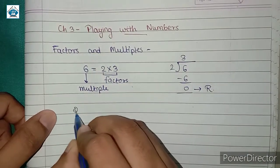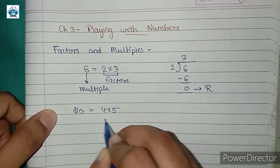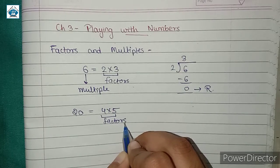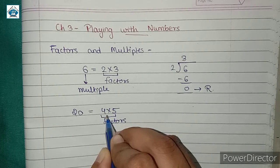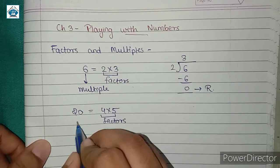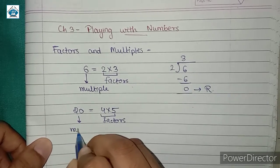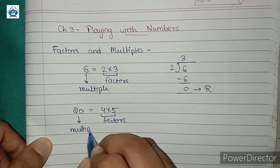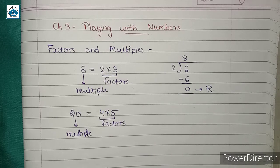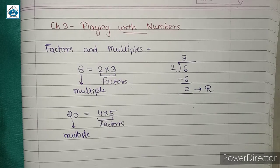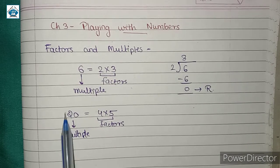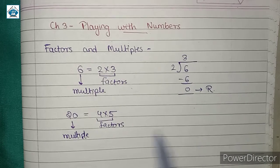Similarly, consider 20. 20 is equal to 4 multiplied by 5, so here 4 and 5 are the factors of 20, because when we divide 20 by 4 we get remainder 0, and when we divide 20 by 5 we also get remainder 0. On the other hand, 20 is a multiple of 4 and 5. So a factor of a number is an exact divisor of that number, and a number is a multiple of each of its factors.